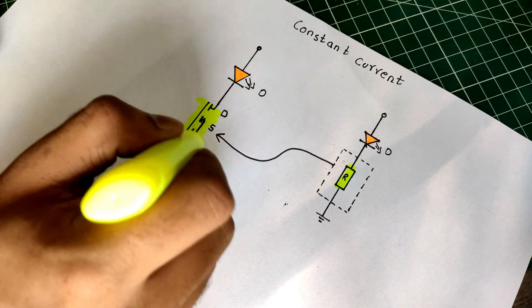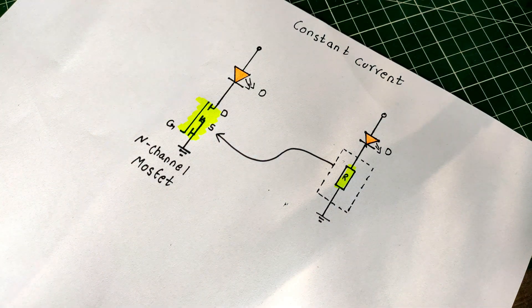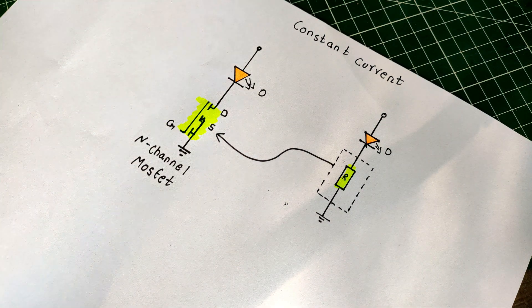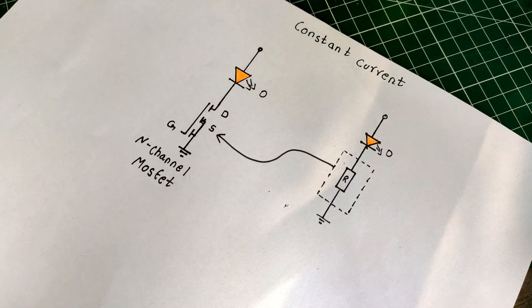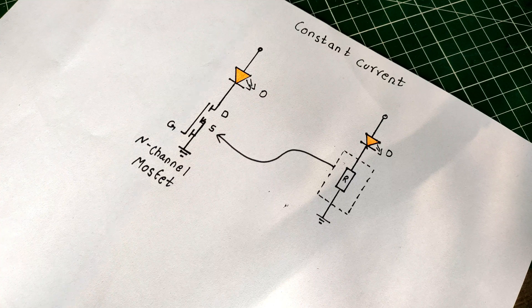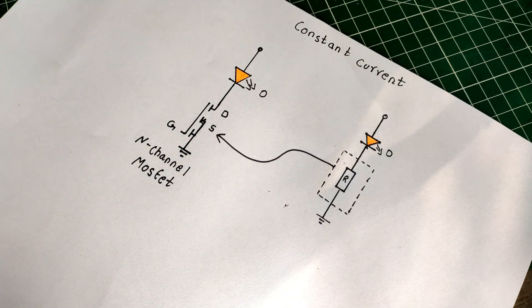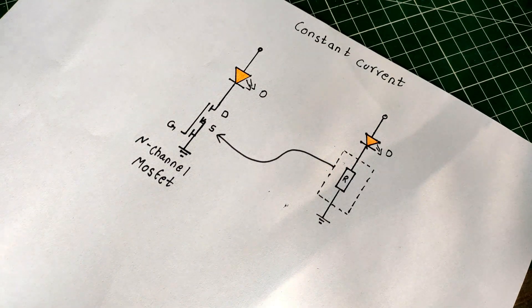How would we do that? We will replace the current limiting resistor with an N-channel MOSFET. Now if you don't know what a MOSFET is, it's essentially like a switch but it can vary the resistance across its drain and source terminals according to the voltage applied at the gate terminal.